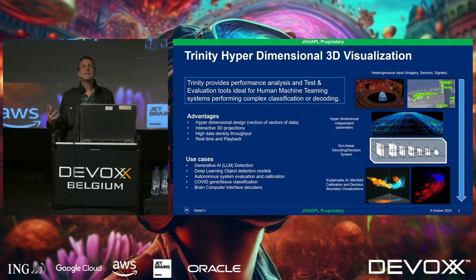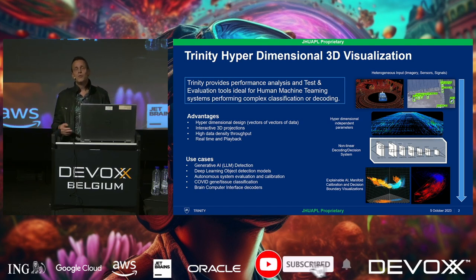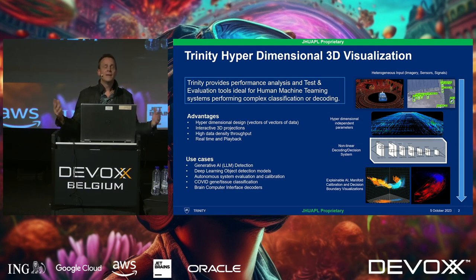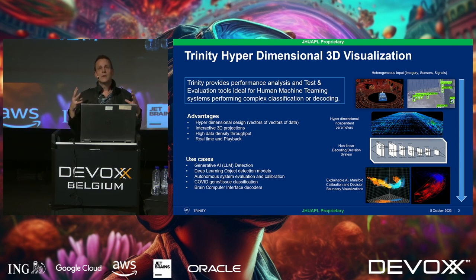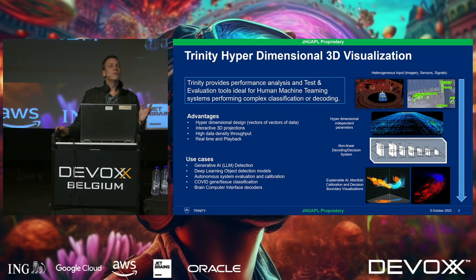Trinity is a vector-oriented visualization and extraction tool. Which is good, because what are machine learning models? Just gobs and gobs of vectors. Vectors in, visualization, dimension reduction, clustering, distance measurements, analysis. It doesn't replace the human, but it makes them a hell of a lot faster, and it lets them get a lot deeper into a model — like, is my model well-trained? Was this text generated by ChatGPT?